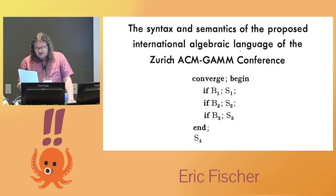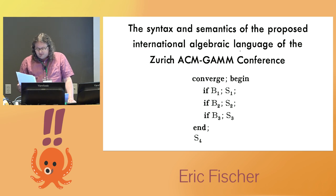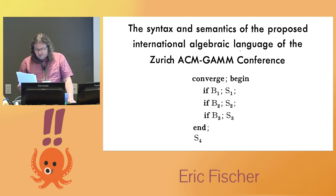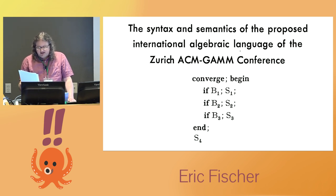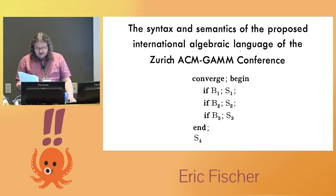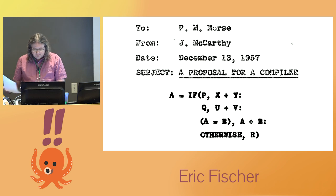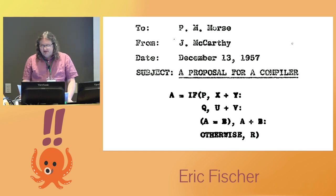The story gets really muddy the next year when several papers about ALGOL were presented at a conference. One of them was the paper where John Backus, who had previously led the Fortran project, introduced the idea of formal grammar for programming languages. ALGOL in his description doesn't have the if either conditional form. Instead, it has a keyword called converge, which makes the top-level ifs inside its block behave like else ifs. It's not clear whether this was meant as an idea for a better if either, or whether it was an earlier idea that had already been rejected in favor of if either. Either way, if either would soon be replaced.